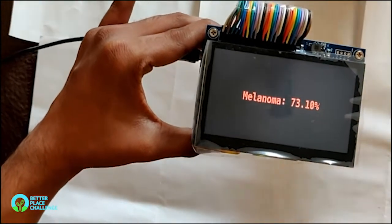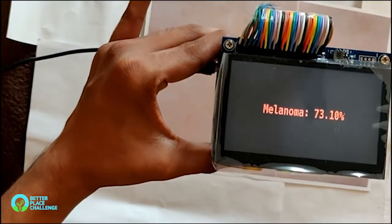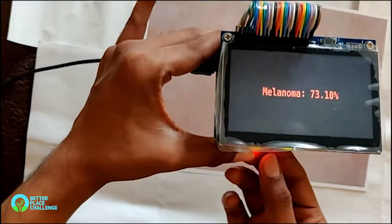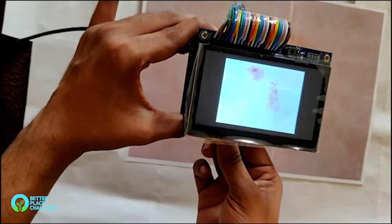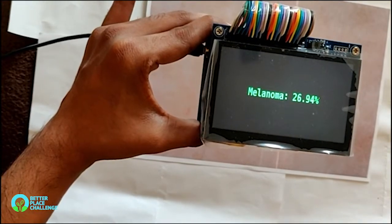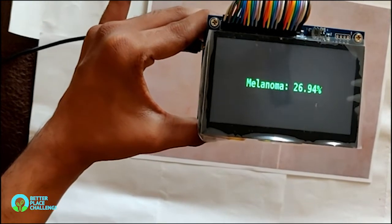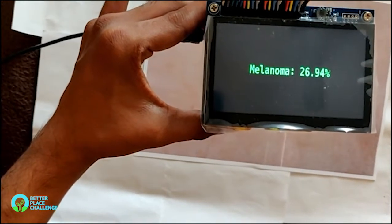Now for the false case, I'll take the skin area which is not affected by melanoma, and I'll press the user input switch. As you can see, the EAI framework has predicted that this could not be melanoma.